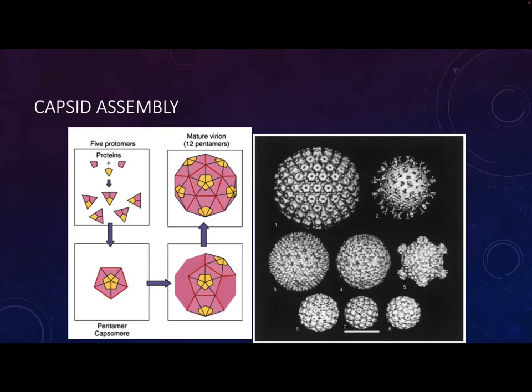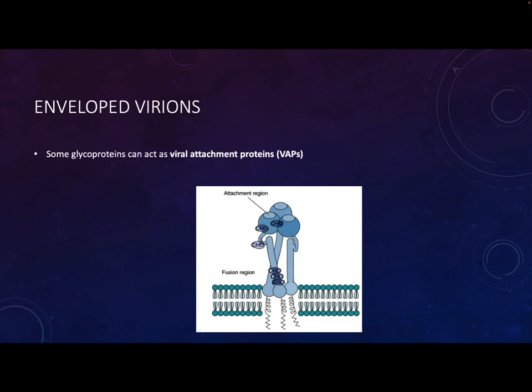Viruses are generally pretty cool looking under an electron microscope. They have individual capsomeres - the individual units that make up the capsid - and you can get all these really cool shapes. With enveloped virions, you sometimes get viral proteins embedded in the envelope, and these often serve as viral attachment proteins - the protein the virus uses to bind to the host cell, like the spike protein of COVID-19.